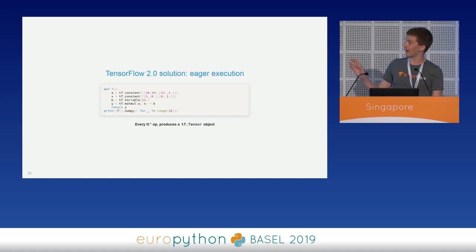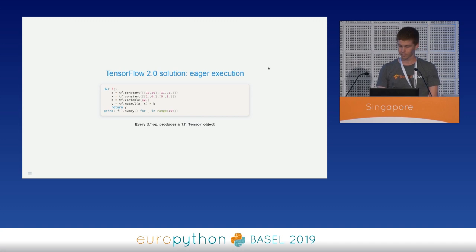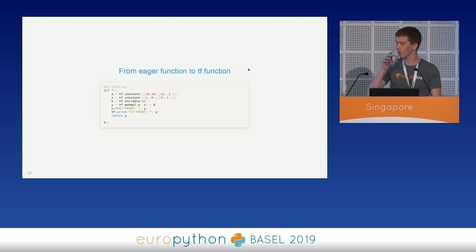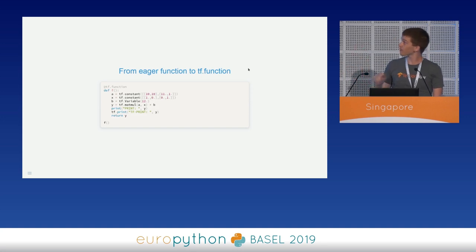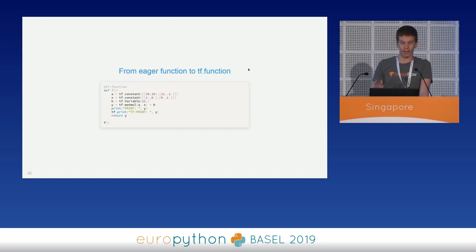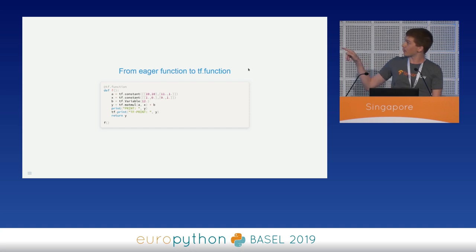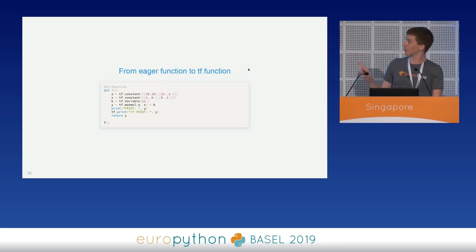Right now we have a pure eager function. But what happens if we try to decorate this function and convert it to its graph representation using TF function? Adding the decorator is pretty straightforward. We might expect that since this function worked correctly in eager mode, we can convert it to its graph representation just by adding the decorator. I added two print statements before the return: one is a Python print statement executed only during tracing, and the second is a tf.print statement that is a node in the graph. This will help us understand what's going on.